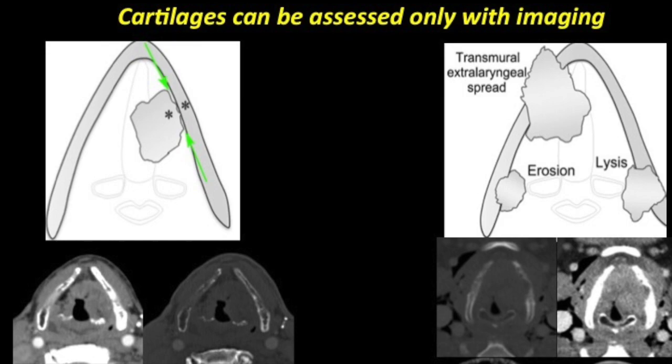It is very important to know that cartilages play an important role in the management of laryngeal malignancy. Inner cortex involvement alone is a candidate for chemoradiotherapy, while outer cortex involvement is a candidate for surgery. The CT signs of cartilage involvement are abutment, erosion, lysis, and transmural extension. Mere abutment and sclerosis is a highly sensitive sign but has very low specificity, as it can be due to reactive changes along the tumor boundary and should not be used as a definitive criterion.